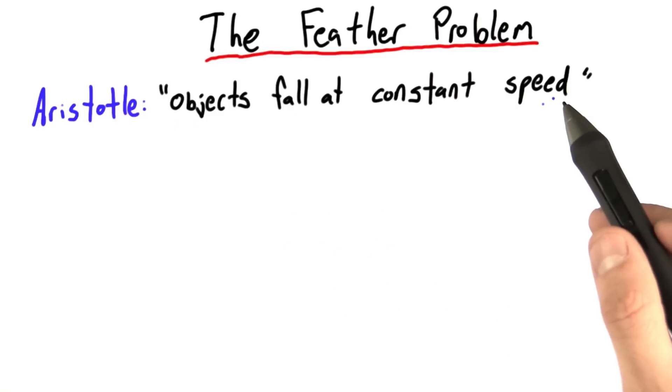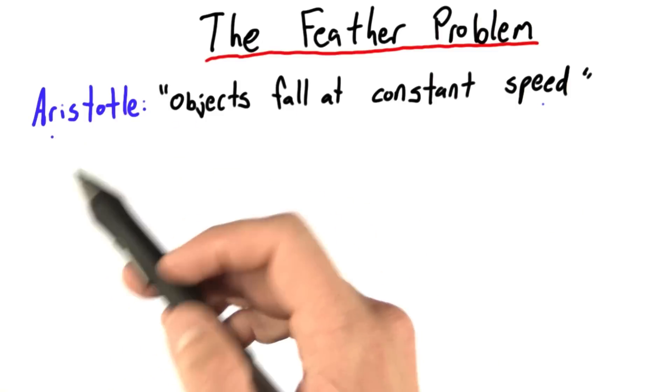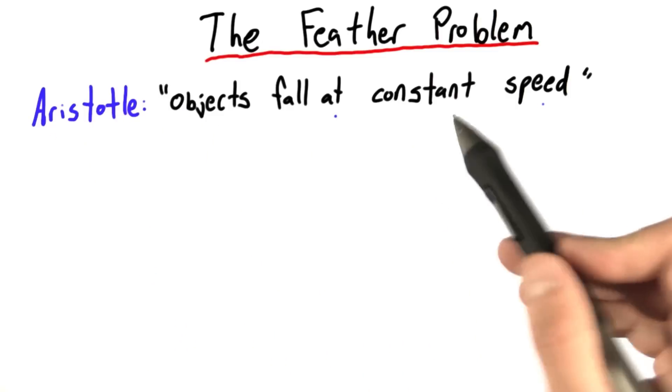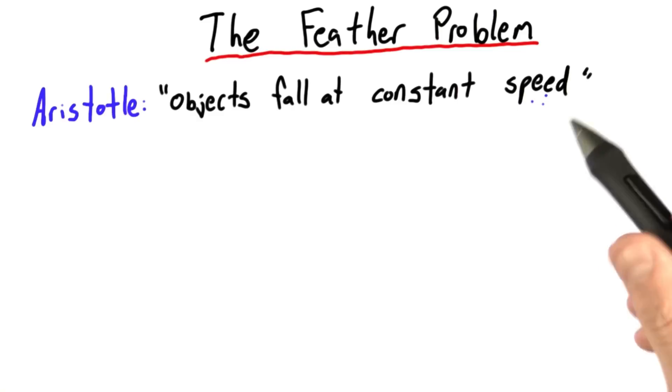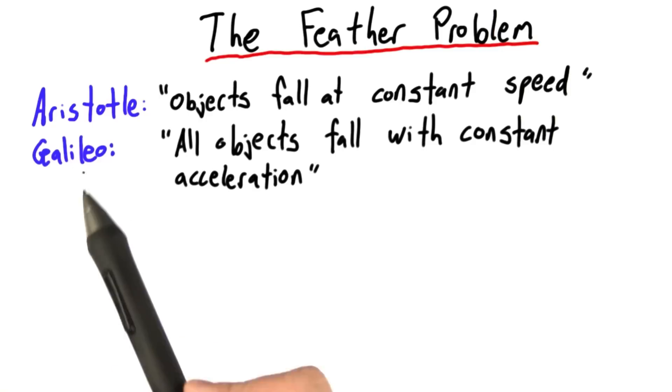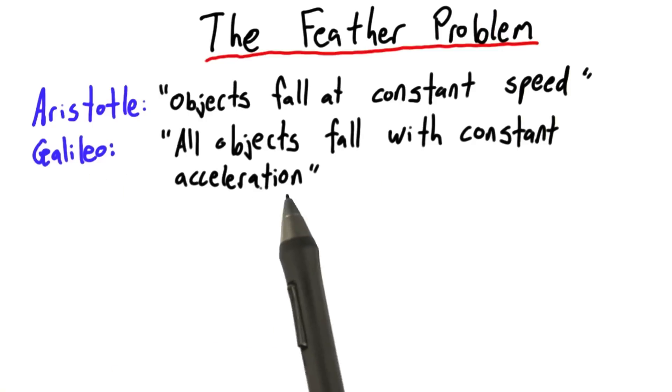Let's start this problem set by talking about the feather problem. Remember back in Unit 2 that Aristotle said objects fall at a constant speed, and he said that speed was proportional to their mass. Galileo, on the other hand, said that all objects fall with constant acceleration.